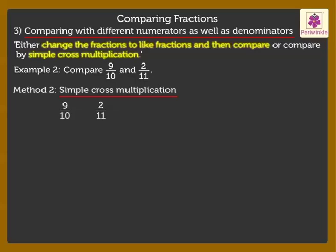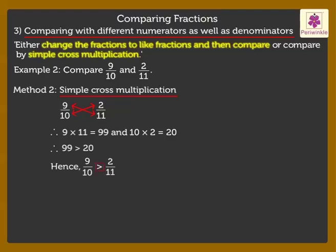Here we cross multiply, that is 9 and 11 and 2 and 10. Therefore 9 into 11 is equal to 99 and 10 into 2 is equal to 20. Here 99 is greater than 20, hence we say 9 upon 10 is greater than 2 upon 11.